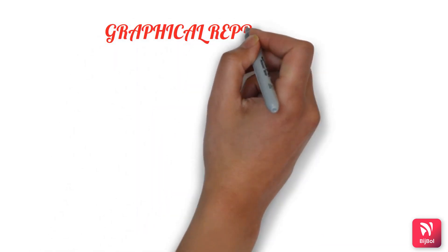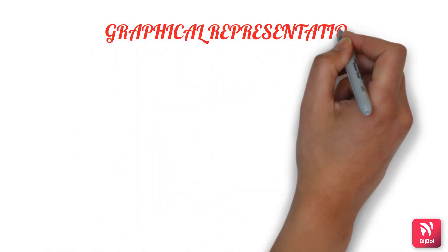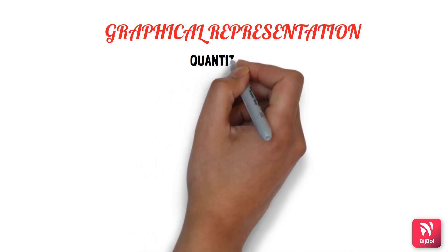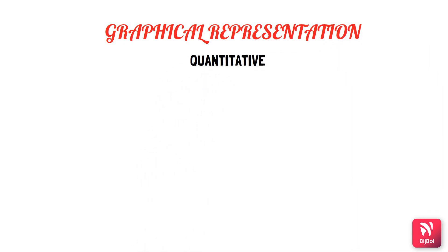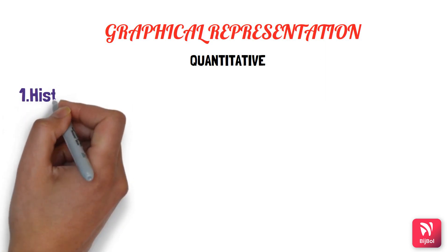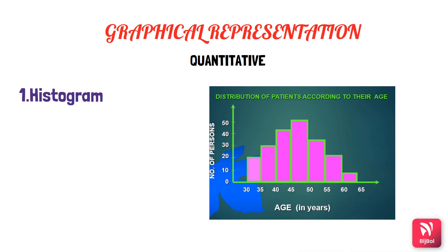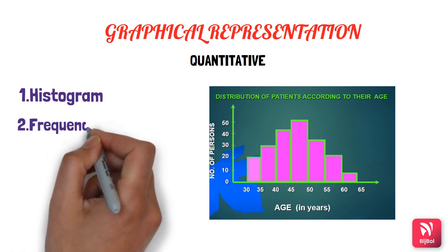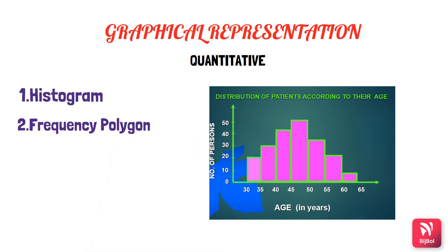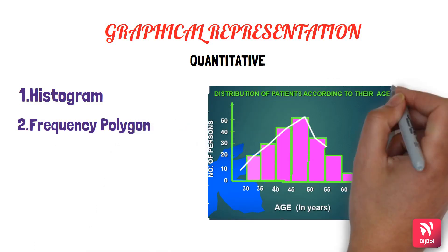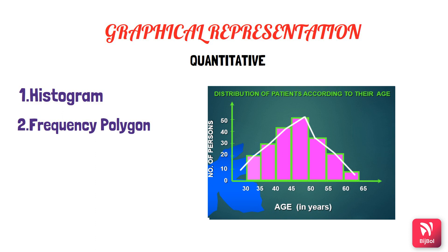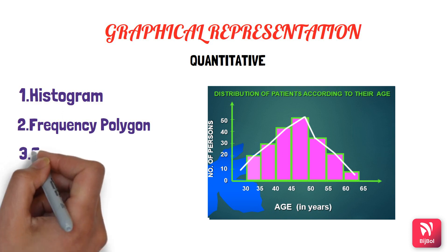Now the next thing is graphical representation, which is most commonly used for quantitative data. The first is the histogram, which is a pictorial diagram of frequency distribution. This is not to be confused with the bar chart — the bar chart has spaces between bars, whereas the histogram does not. The frequency polygon is also a pictorial diagram of frequency distribution; a point is marked over the midpoint of each histogram block and all points are connected by straight lines.